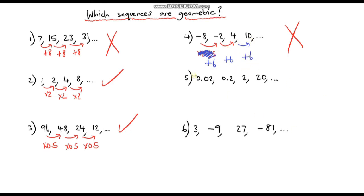Question 5: to go from 0.02 to 0.2, I'm just increasing by a scale factor of 10 — multiplying by 10. Again multiplying by 10, and from 2 to 20 I'm multiplying by 10. So yes, this is indeed a geometric sequence and the common ratio is 10.